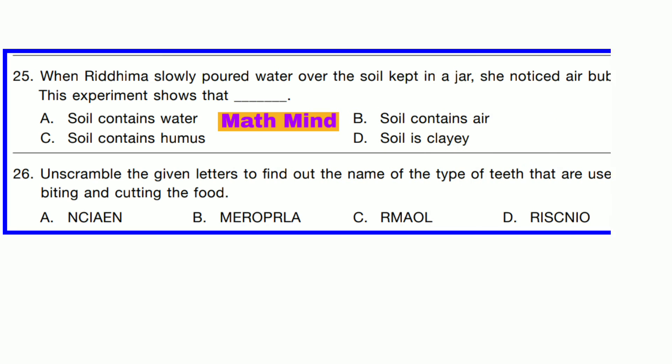Question number 25. When Rydhima slowly poured water over the soil capped in a jar, she noticed air bubbles. This experiment shows that option B is correct: soil contains air.